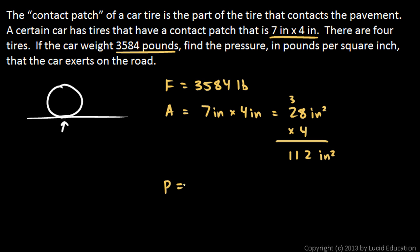So then the pressure will be the force divided by the area. And that's what we're trying to find, find the pressure. So 3,584 pounds divided by 112 square inches. And we pull out the calculator. 3,584 divided by 112 is 32. That's 32 pounds per square inch.